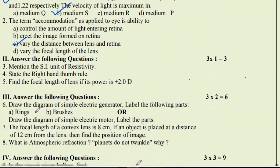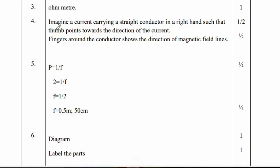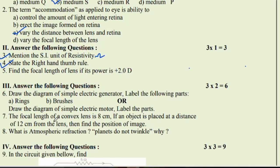Second main, answer the following questions. Question number 3, mention the SI unit of resistivity, that is the ohm. If you are writing ohm as the answer, one mark you will get. And state the right hand thumb rule: imagine a current carrying straight conductor in right hand such that thumb points towards the direction of the current and fingers around the conductor shows the direction of the magnetic lines.